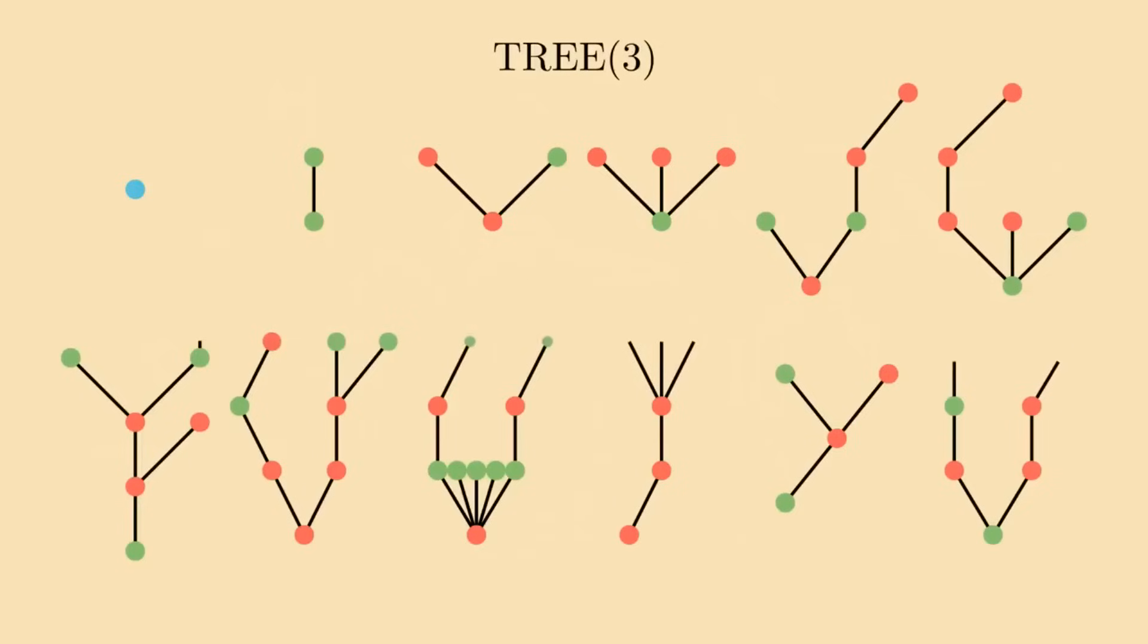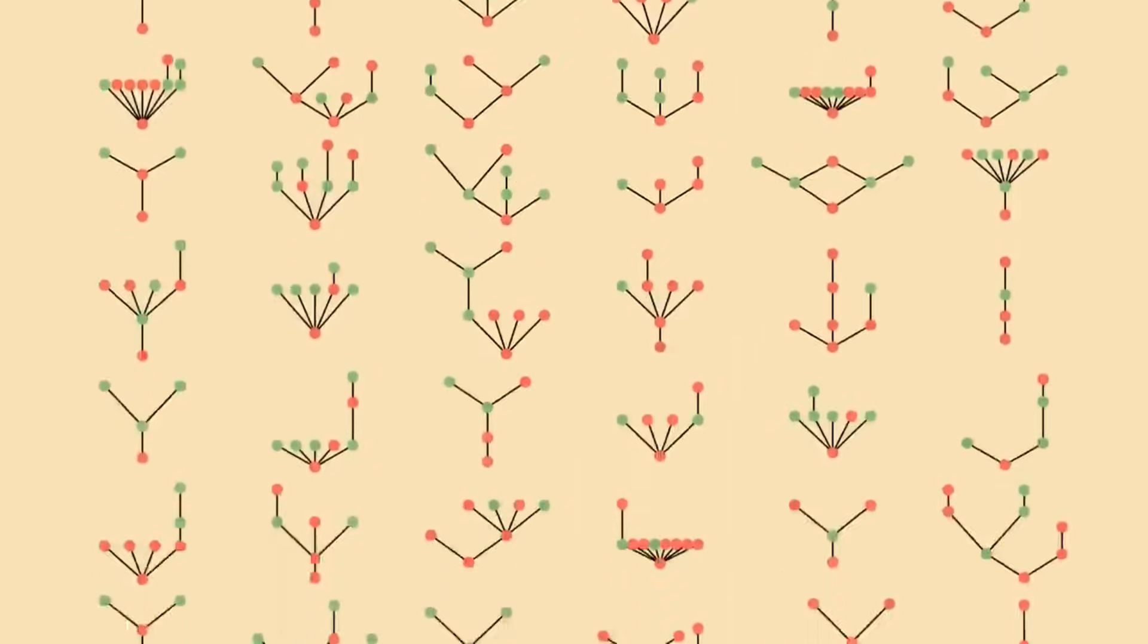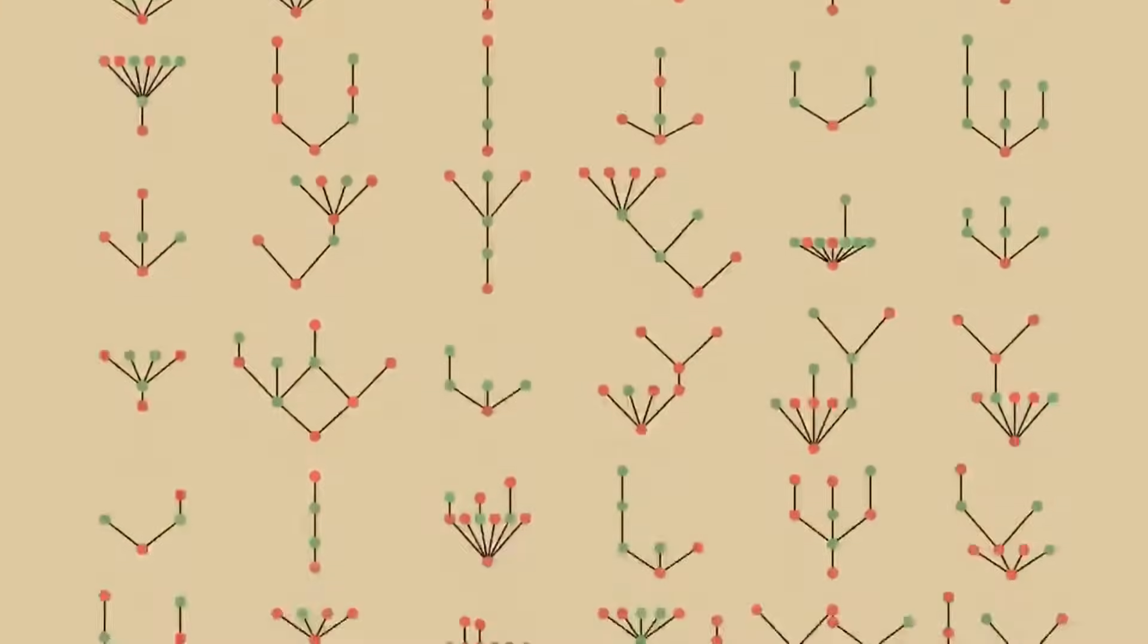Mathematicians have proved the game must end at some point, but they've not been able to count the trees it would take to get there. They've not been able to, because if they did, their brains would implode.